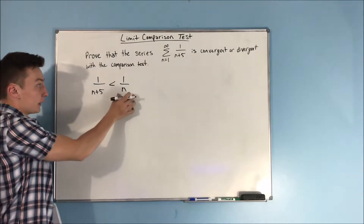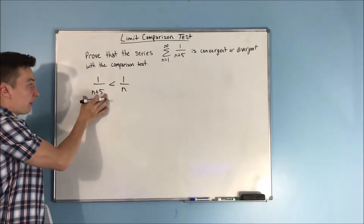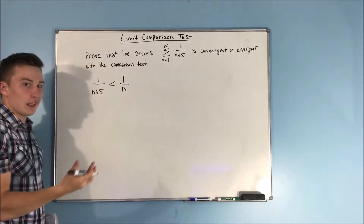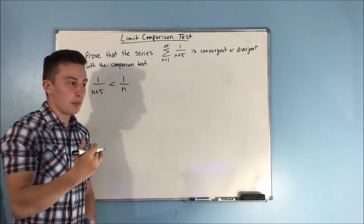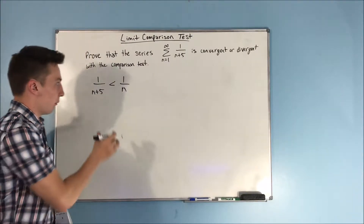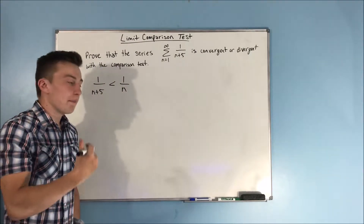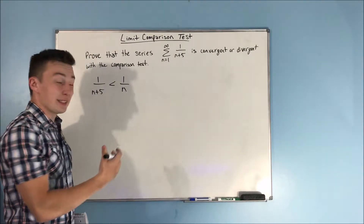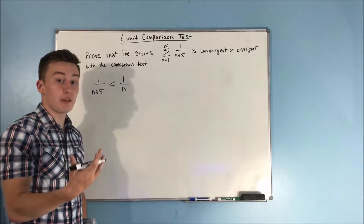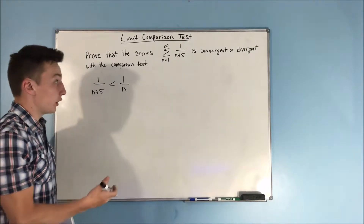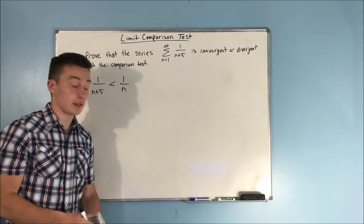If this is bigger than this, that's not going to tell us anything, because this is smaller, so it could be convergent still. So the comparison test isn't going to be something we can use for this, but there is something we can use called the limit comparison test.